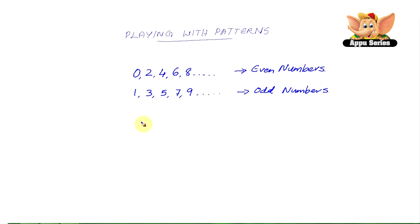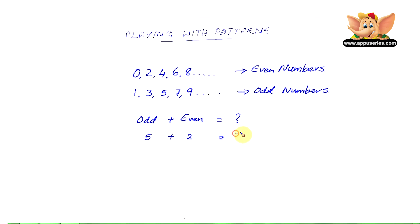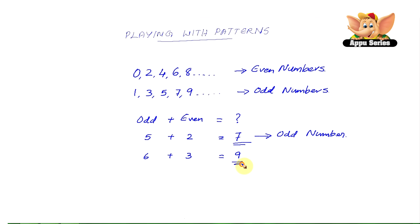Let me tell you something interesting. Let's see what happens when you add an odd and even number. For example, 5 plus 2 equals 7. Or, 6 plus 3 equals 9. So when we do this, we always get an odd number.